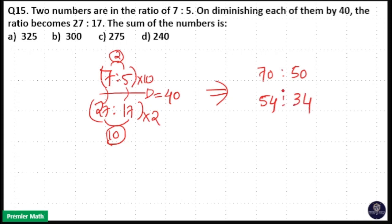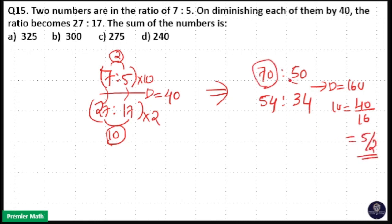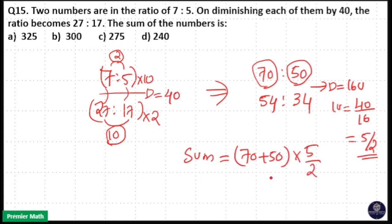Taking the differences: 70 minus 54 and 50 minus 34 are both 16 units, so 1 unit equals 40 divided by 16, which is 5 by 2. The initial ratio parts are 70 units and 50 units, giving a total of 120 units. So the sum is 120 units multiplied by 1 unit (5 by 2), which equals 120 into 5 by 2 — that is 60 into 5 — equals 300. So option B is your answer.